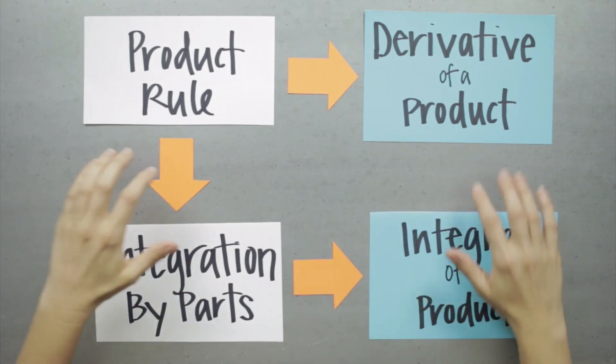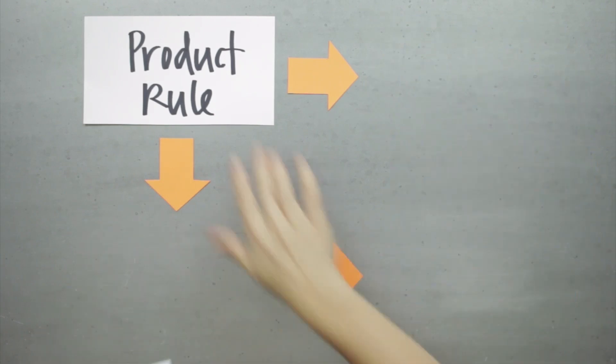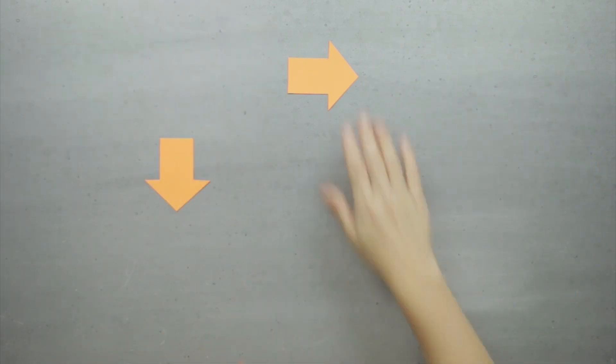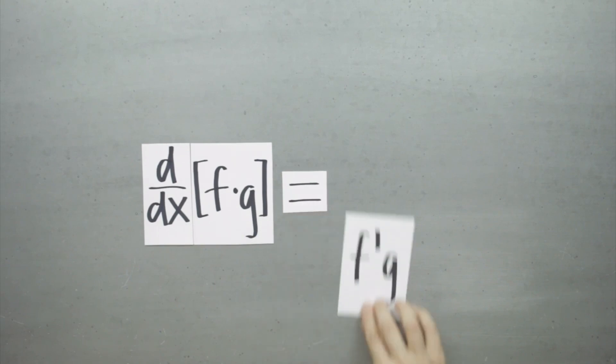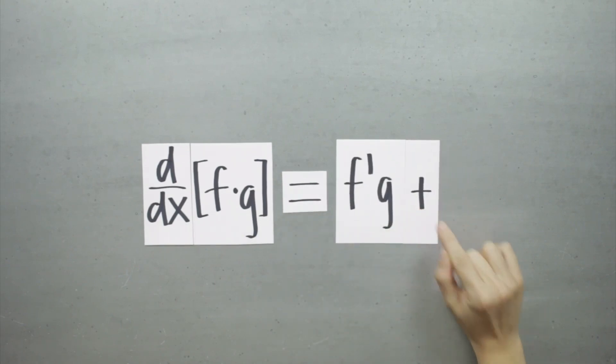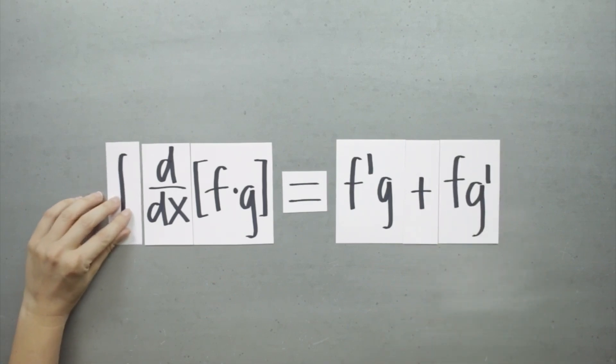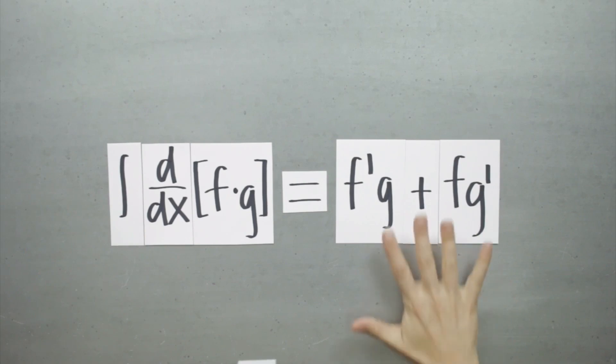So if we assume the product rule formula is true, then it's pretty straightforward to see how the integration by parts formula is also true. If we start with the product rule, which tells us that the derivative of the product of two functions, f and g, is given by the sum of the derivative of f times g and f times the derivative of g, then we can integrate both sides of the product rule formula.